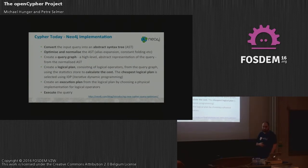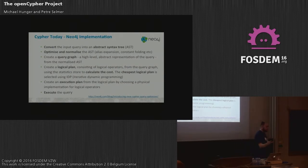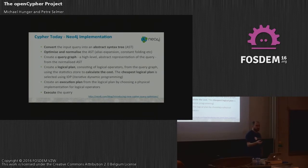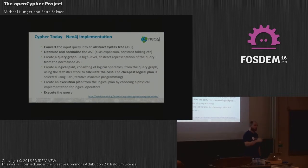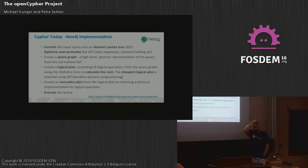How does Cypher work? The query is parsed into an AST, then we normalize and optimize the AST, do concept folding, compute already-computable expressions, and rewrite parts of the query. For instance, the inline property syntax is rewritten into a predicate. We also do semantic checking — type system checks and similar things that the parser couldn't catch. Then we create a query graph as a high-level description of the query.